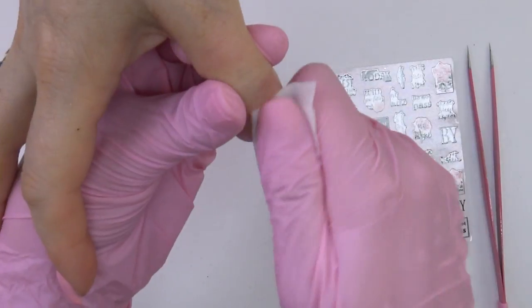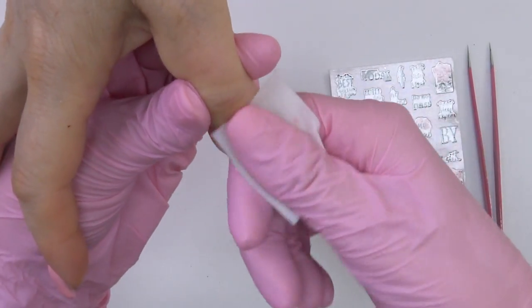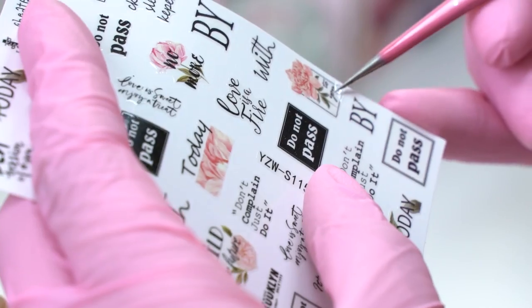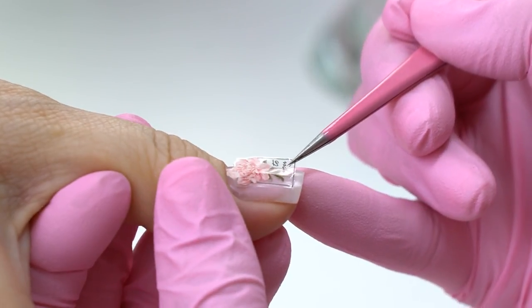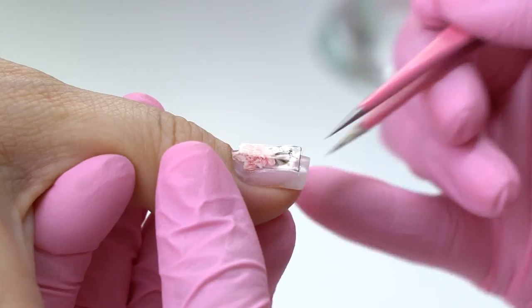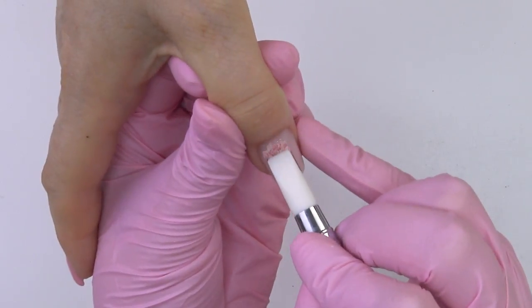I wipe off the tacky layer of the thumb and attach a sticker. I love such stickers, cause they are sticky and you don't have to soak them as sliders. They look great though.